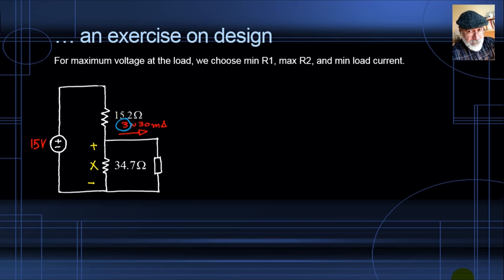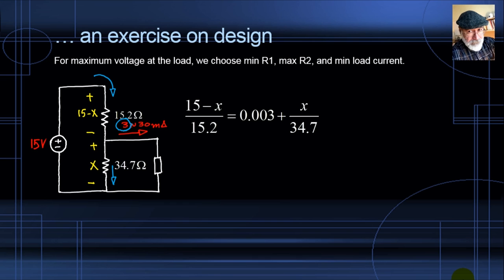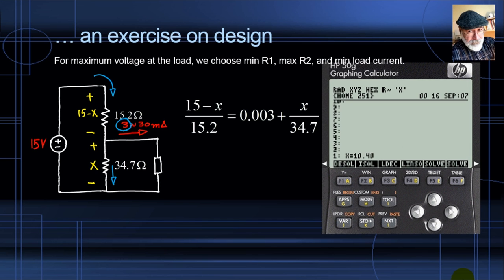Writing a KCL equation at the middle node with the unknown voltage X: (15 − X)/15.2 = 0.003 + X/34.7. Using the calculator to solve for X, the maximum probable voltage on the load is 10.4 volts.